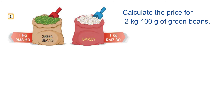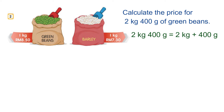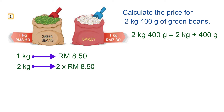Now let's look at example two. We have 1 kilogram of green beans costing 8.50 ringgit and 1 kilogram of barley costing 7.30 ringgit. Calculate the price of 2 kilograms 400 grams of green beans. We split them: 2 kilograms and 400 grams. Let's find the cost for 2 kilograms first. The cost of 1 kilogram is 8.50 ringgit. To find the cost for 2 kilograms, 2 multiplied by 8.50 ringgit, we will get 17 ringgit.